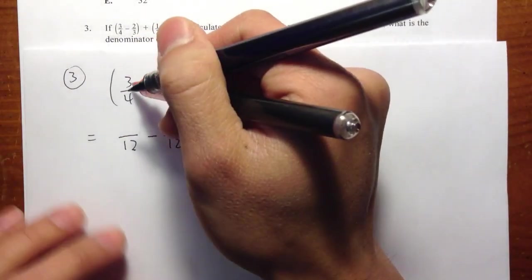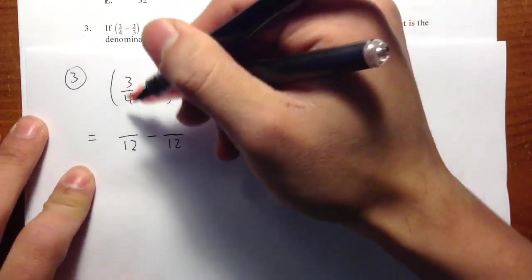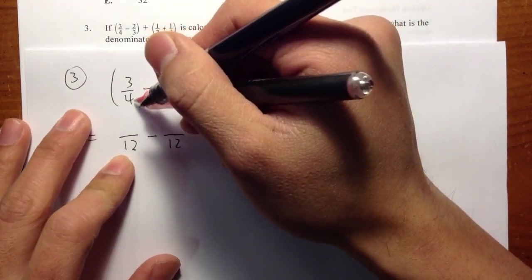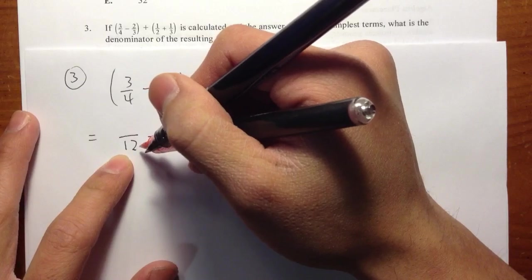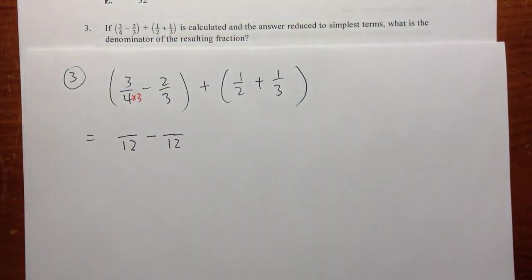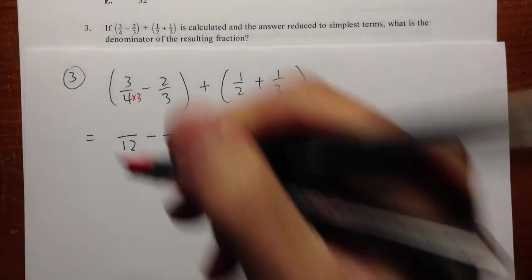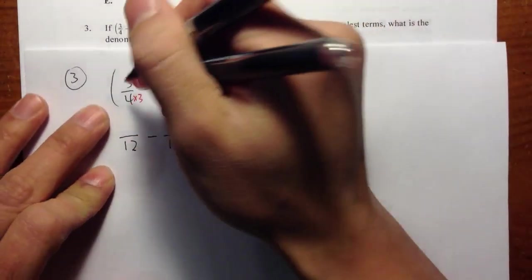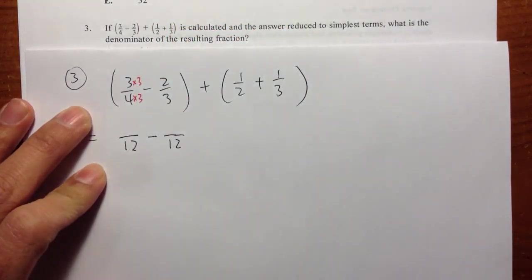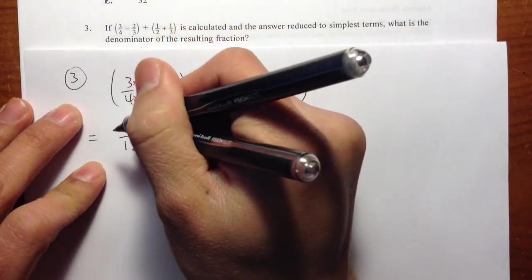On the first fraction, I had 3 over 4. So just look at the denominator and ask ourselves, 4 times what will be 12? 4 times 3 will be 12. So let me make a note right there. 4 times 3 gives us 12. And I will multiply by 3 on the top to this 3 in black. So 3 times 3, you get 9.